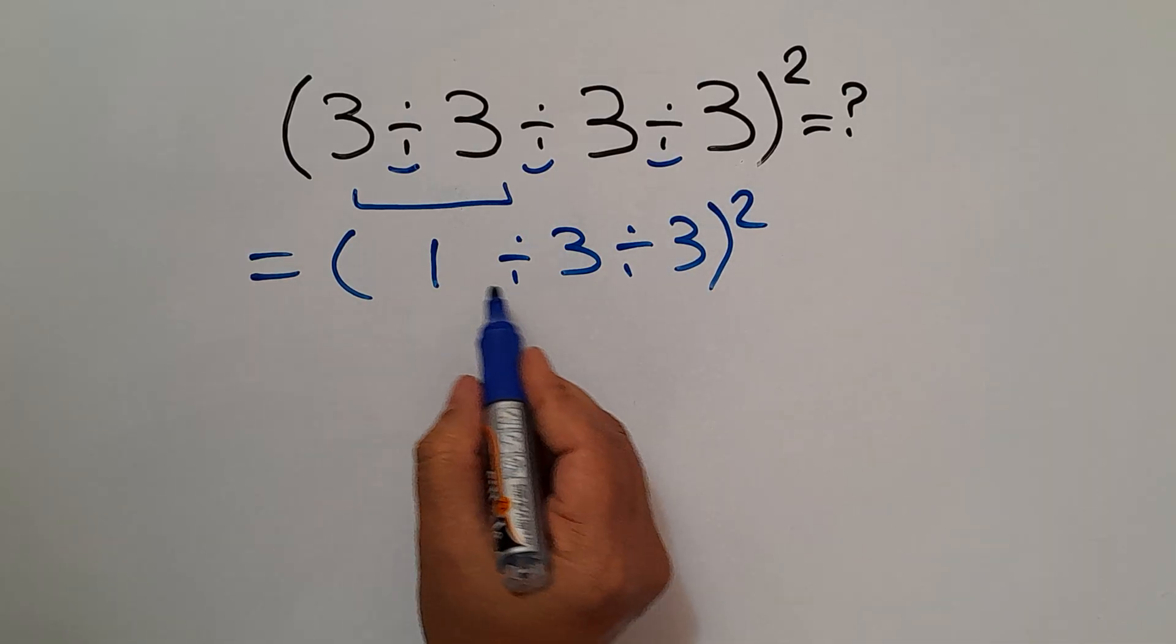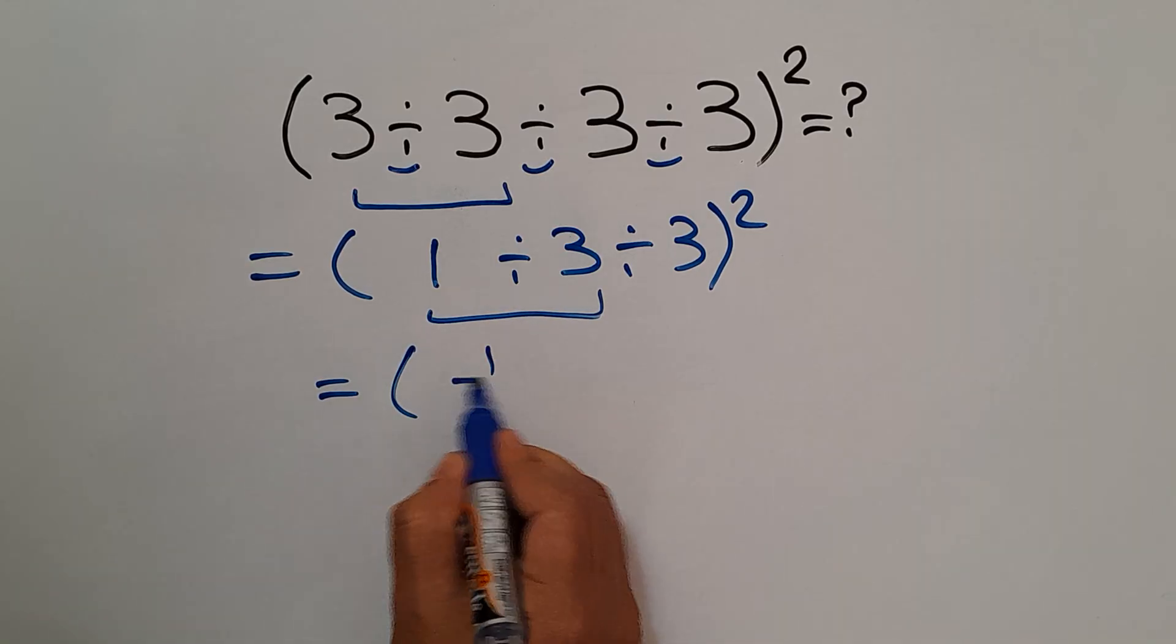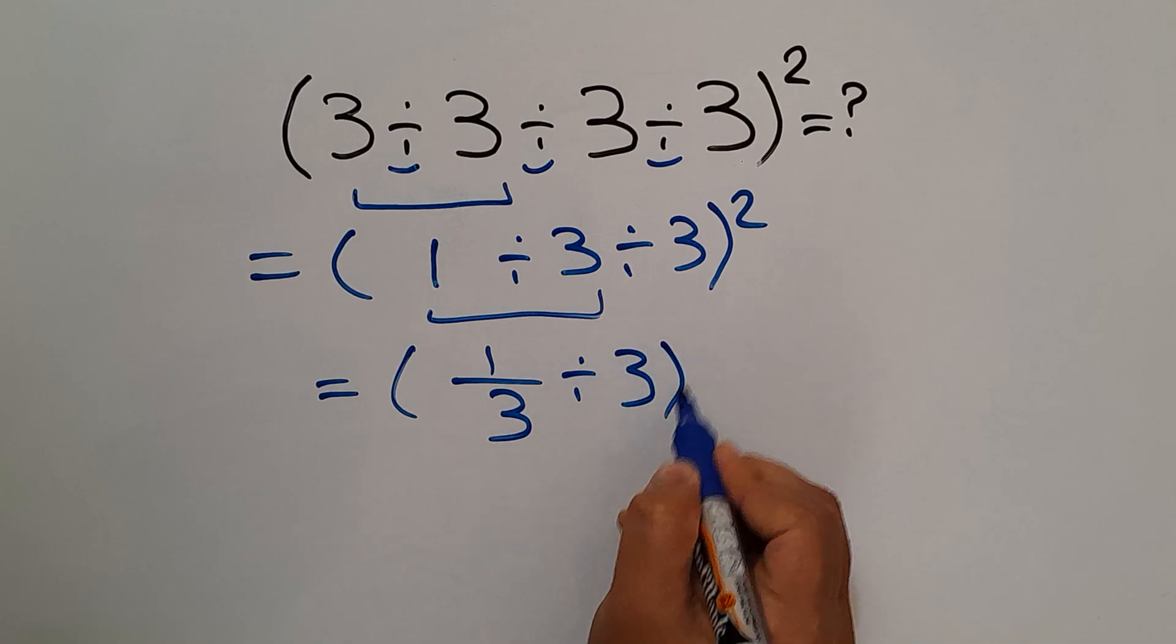Now, 1 divided by 3 can be written as 1 over 3, then divided by 3, whole squared.